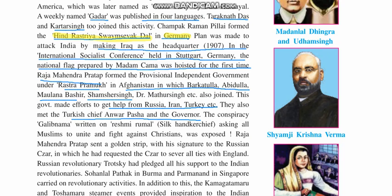The conspiracy known as the Gulab Nama, written on Reshmi Rumal — a silk handkerchief — asking all Muslims to unite and fight against the British, was later exposed. This was a very significant chapter in the revolution. Raja Mahendra Pratap also sent a golden strip with his signature to the Russian Czar, requesting him to cut all ties and relations with England. Russian revolutionary Trotsky also helped India during this period.